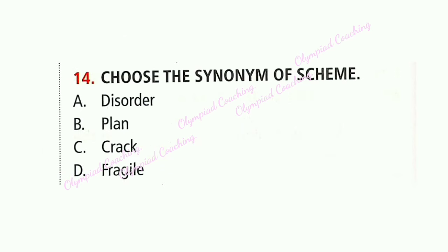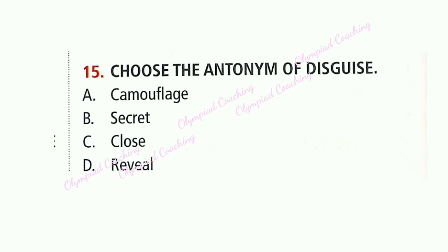Question 14: Choose the synonym of 'scheme.' Option B is correct: Plan. Question 15: Choose the antonym of 'disguise.' Option D is correct: Reveal. 'Disguise' means to change something so that people cannot recognize it. 'Reveal' means to show something that was hidden before. So both words are antonyms.